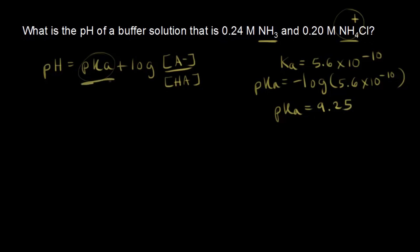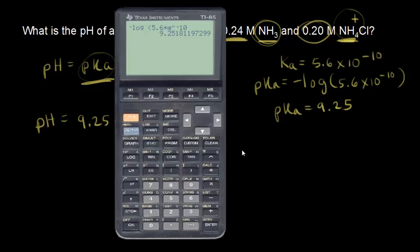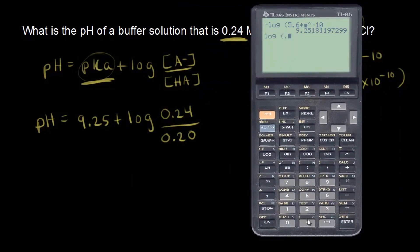We're going to plug that into our Henderson-Hasselbalch equation. So the pH of our buffer solution is equal to 9.25 plus the log of the concentration of A minus — our base is ammonia, NH3, and its concentration in our buffer solution is 0.24 M. That is over the concentration of our acid, NH4+, which is 0.20 M. So we take the log of 0.24 divided by 0.20, and that gives us 0.080.